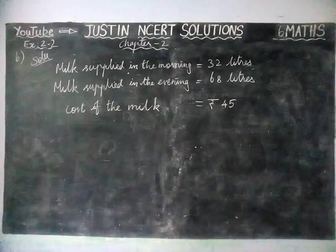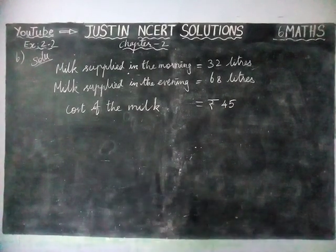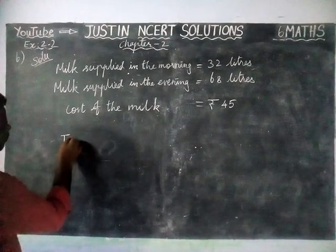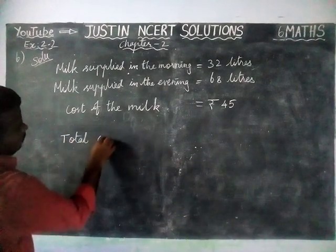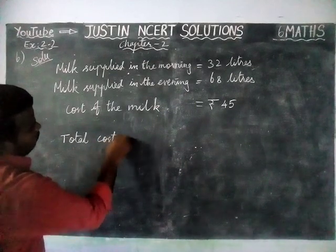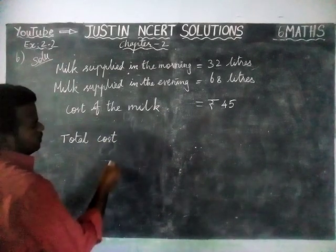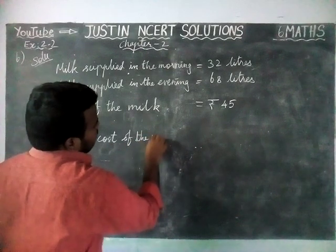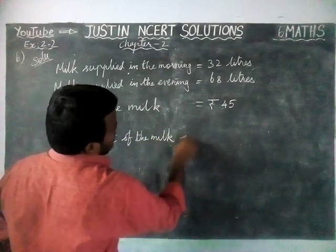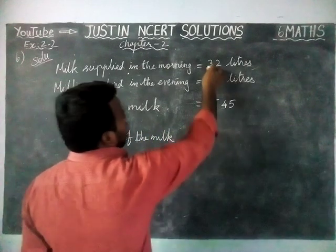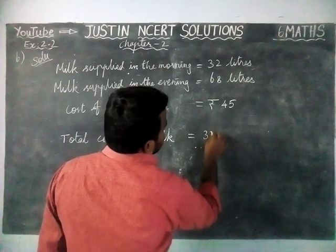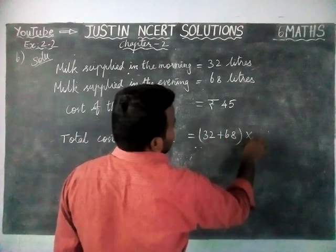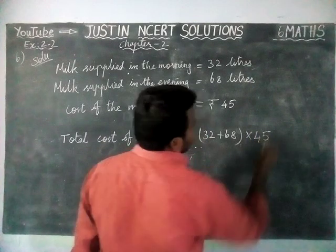Now they ask us to find what is the total cost per day due to the vendor. Total cost of the milk is equal to — we have to add the total number of liters: 32 plus 68, and then multiply by 45 rupees per liter.